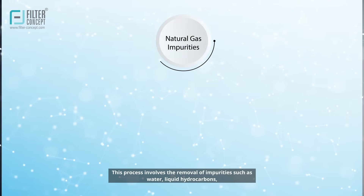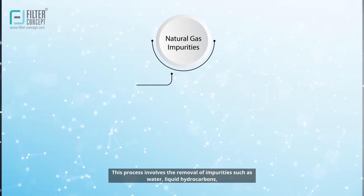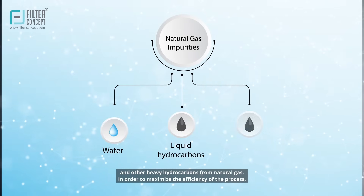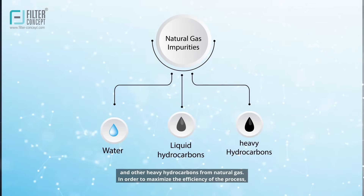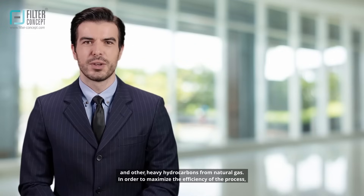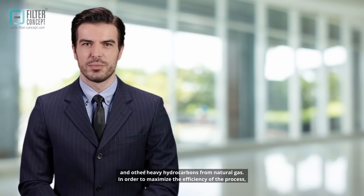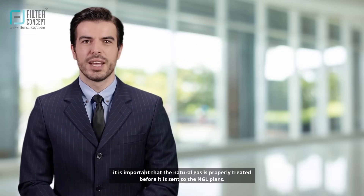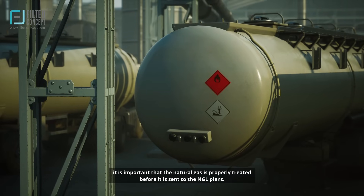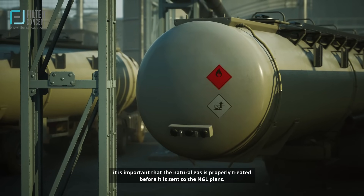This process involves the removal of impurities such as water, liquid hydrocarbons, and other heavy hydrocarbons from natural gas. In order to maximize the efficiency of the process, it is important that the natural gas is properly treated before it is sent to the NGL plant.